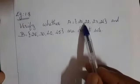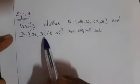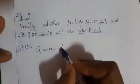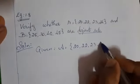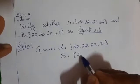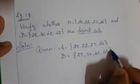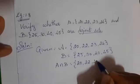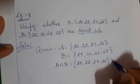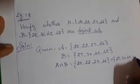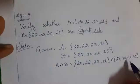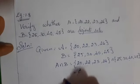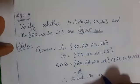Verify whether A equal to {20, 22, 23, 24} and B equal to {25, 30, 40, 45} are disjoint sets. Write the given sets. To find disjoint sets, you have to find the intersection of A and B. Check each element: 20 is not present in B, 22 no, 23 no, 24 no. Therefore, A intersection B is empty. Therefore, A and B are disjoint sets.